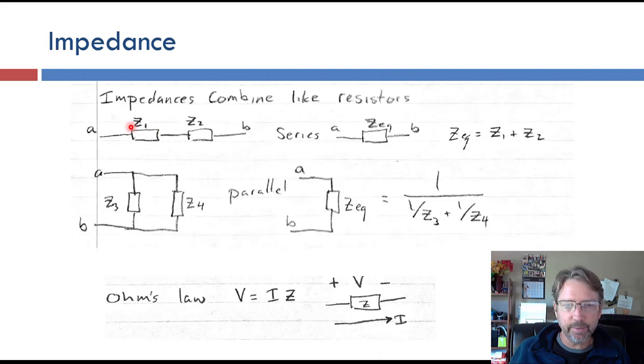Z is the variable we use for impedance, and impedances combine just like resistors. So if you have two impedances in series, the total impedance is the sum. If they're in parallel, it's the one over the one overs, and we have Ohm's law. So this is all stuff that we've seen in the previous lectures.